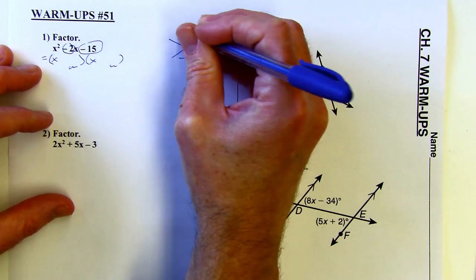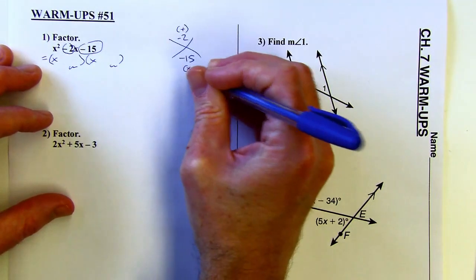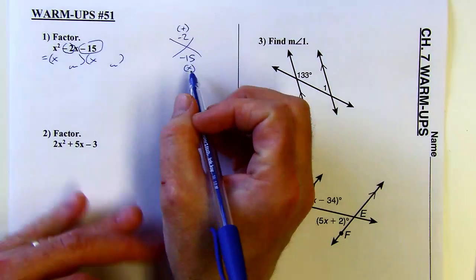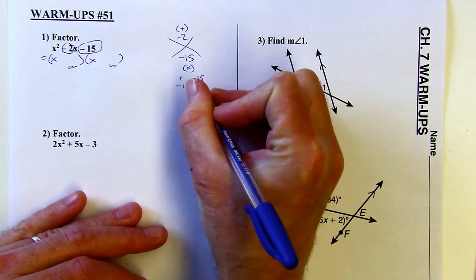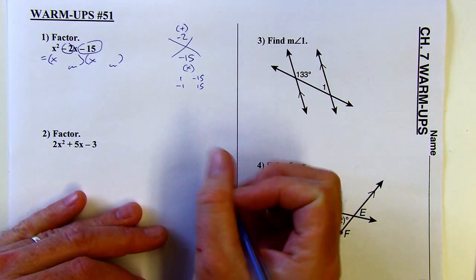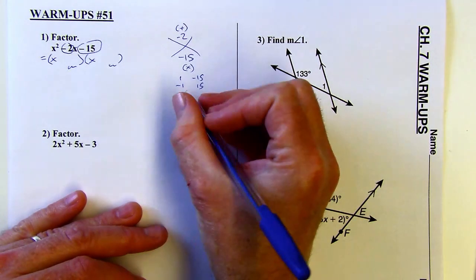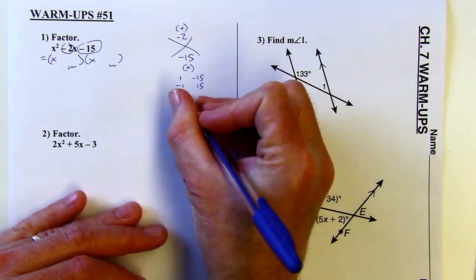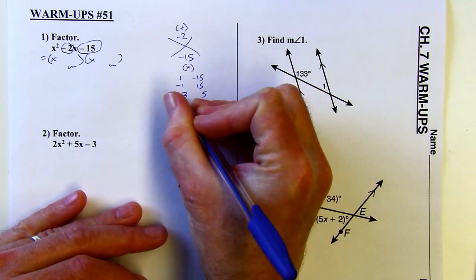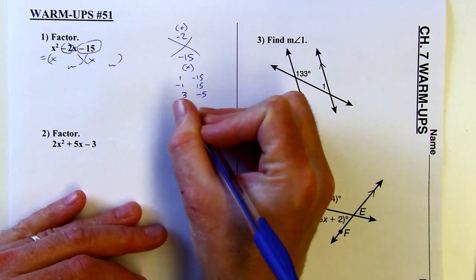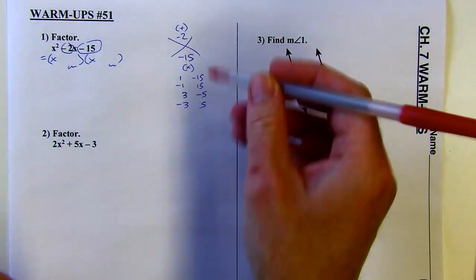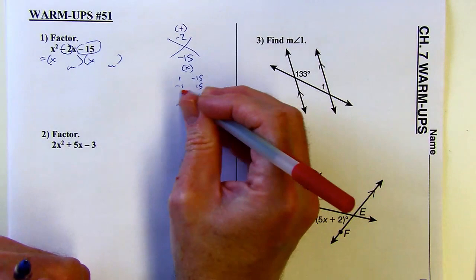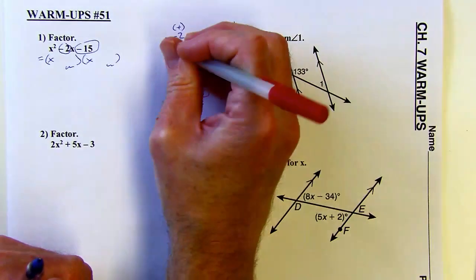I'm looking for two numbers that add to negative two and multiply to negative 15. So if you think about the different ways to multiply to get negative 15, there's two different ways. One times negative 15 or negative one times 15. Those don't add up to negative two, though. So let's try a three and a five. I could do three times negative five or negative three times positive five. So only one of these four combos is going to work, and it's this one. That's the one that adds up to negative two.